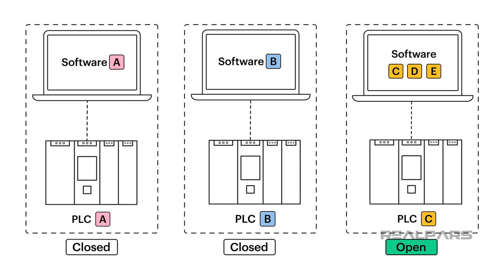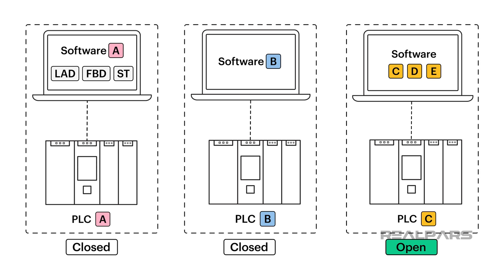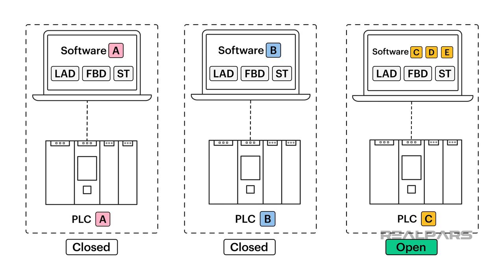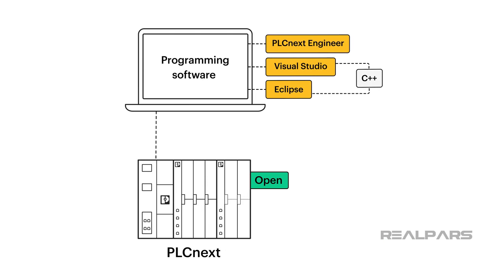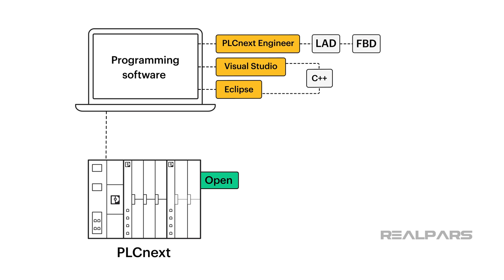Going back to the initial example, for PLC A, I can only use Software A for programming, and since this is a classic PLC, Software A only supports typical PLC programming languages such as Ladder Logic, Function Block Diagram, and Structured Text. The same goes for PLC B, as this is also a closed and classic PLC. But for PLC C, I can use Software C to program this PLC using typical PLC programming languages. I can also use Software D and Software E for other high-level programming languages such as C++. For example, with PLCnext, I can use PLCnext Engineer to write code in typical PLC programming languages such as Ladder Logic, Function Block Diagram, and Statement List.